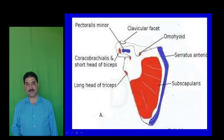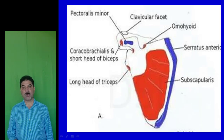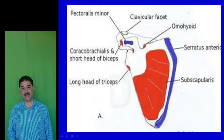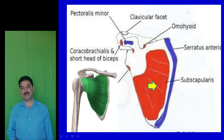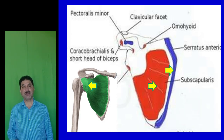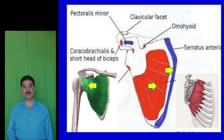The subscapularis muscle arises from the ventral surface of the scapula. It is a multi-pennate muscle. To the medial border of the anterior surface is attached serratus anterior, which originates from the upper eight ribs. Serratus anterior is attached to the medial border of the scapula and fixes it with the rib cage.